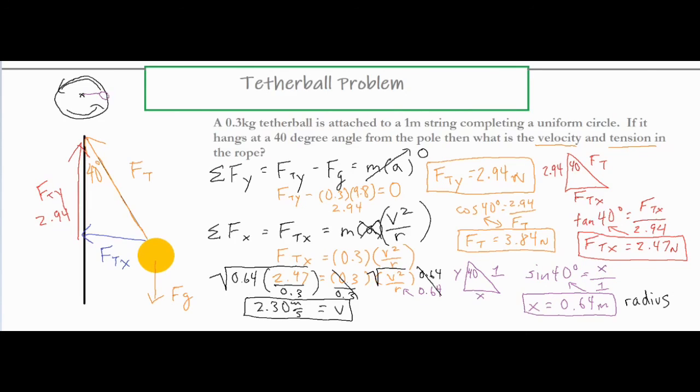To recap what we did, we are setting up our force diagram as usual with our forces in the x and y direction, and we sum them up. We'd have no vertical movement of the ball because it's looping around horizontally. We have FTy, our y component of our tension, subtracted by Fg because that is downwards, and that's equal to 0.